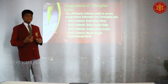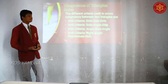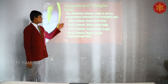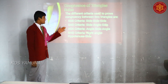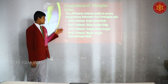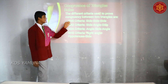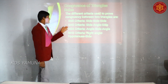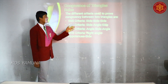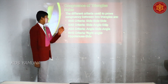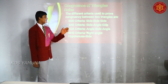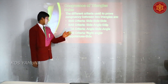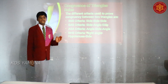The different criteria used to prove that triangles are congruent are SSS, SAS, ASA, and RHS. SSS means side, side, side. SAS means side, angle, side. ASA means angle, side, angle. RHS means right angle, hypotenuse, side.